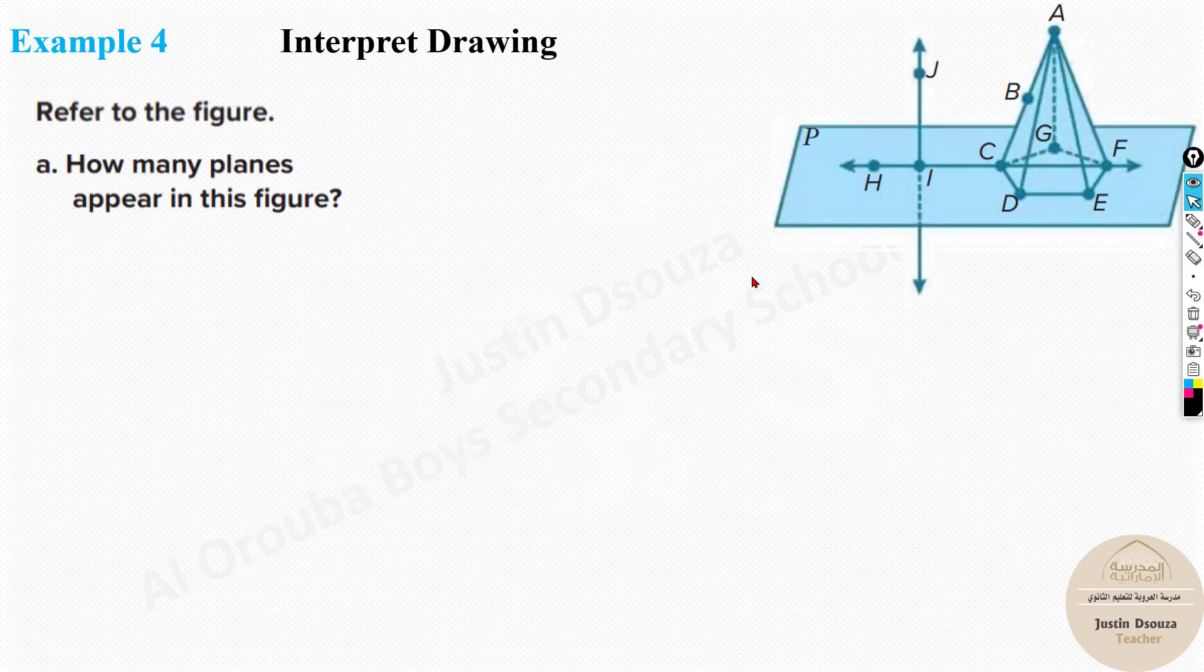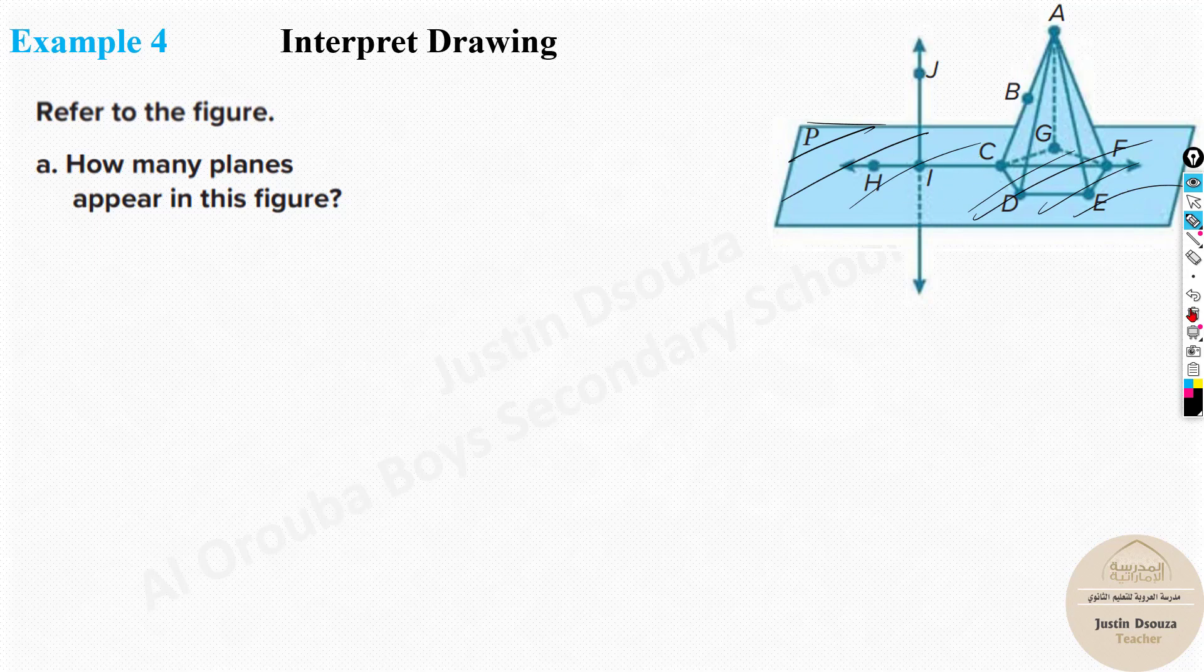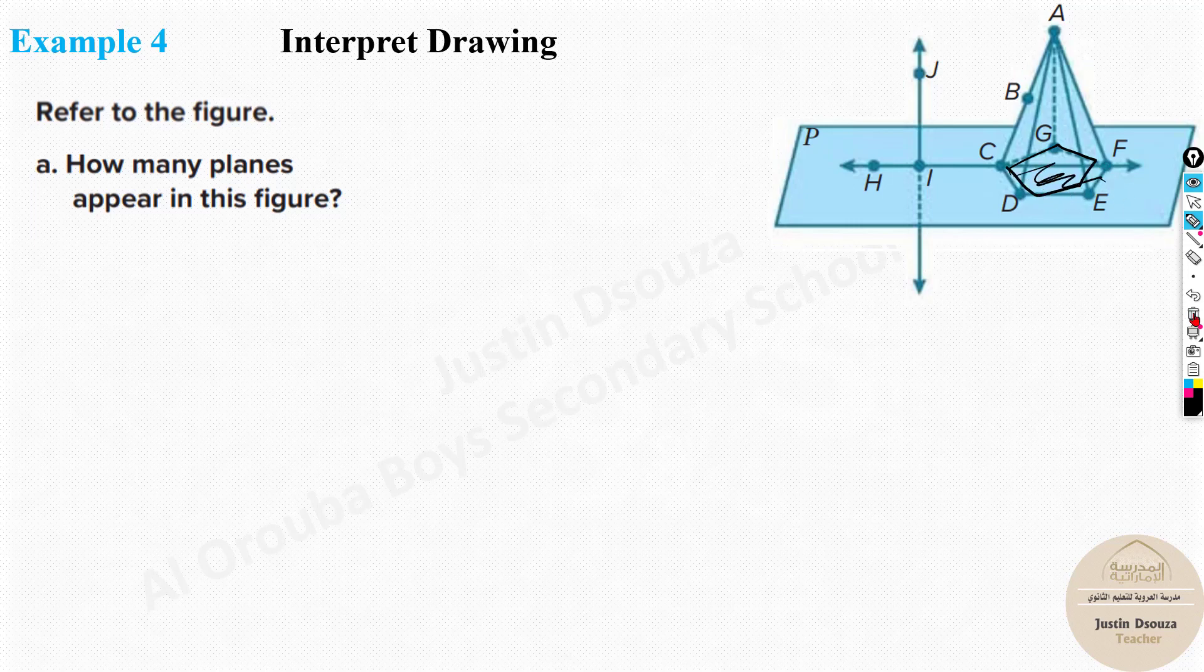Now we have to interpret this drawing. Refer to this figure. How many planes are there? Now here, look at this. How many planes can you see? One is this outer plane. Yes, the entire plane. So all this is included entirely. Plane P, this entire thing. But then you can see this is a pentagon. Don't consider the base. It's already a plane. It's already considered. But you can see this part like this. There are triangles, right? Triangular planes. One, two, three, four, and five. Two of them can't be visible because they are behind over here.